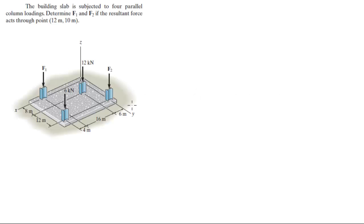For more videos visit ForTheSakeOfEducation.com. Alright guys, let's do this problem where you have this building slab and they want you to find F1 and F2 so that the resultant force acts to a point 12 and 10 — so 12 in the x and 10 in the y.